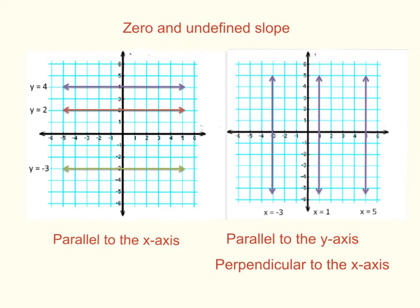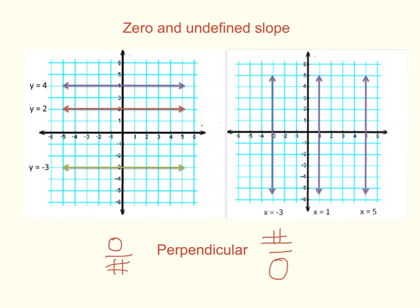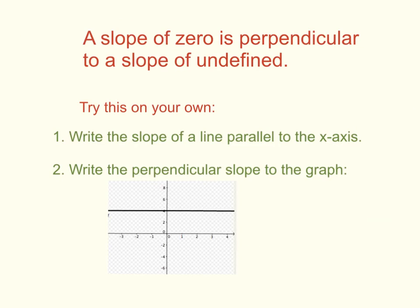What this means is that our slope of zero, zero divided by any number, is going to be perpendicular to our undefined slope, which is any number divided by zero. So here we can see if we flip them, if we take the reciprocal, we get zero or undefined. So a slope of zero is perpendicular to the slope of undefined, and vice versa.